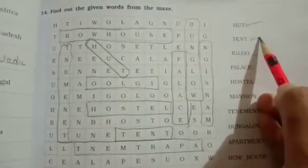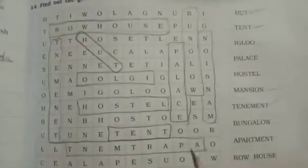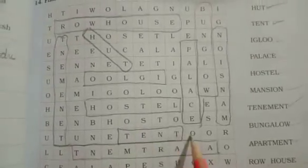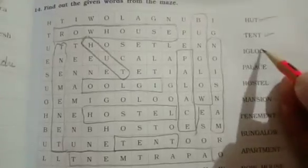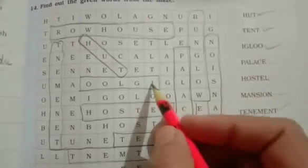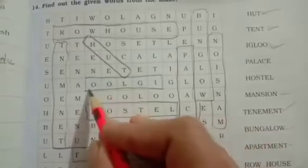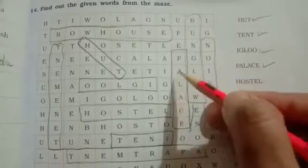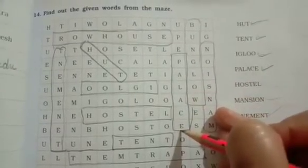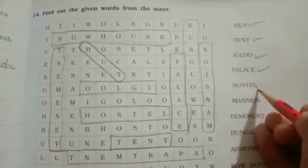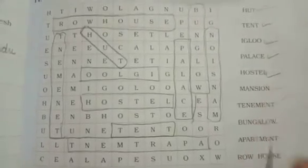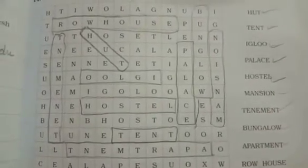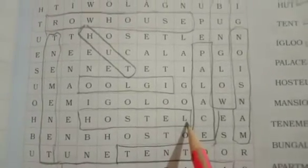Then tent — T-E-N-T. Then igloo — I-G-L-O-O, igloo. Then palace — P-A-L-A-C-E, palace. Then next is hostel — H-O-S-T-E-L, hostel.